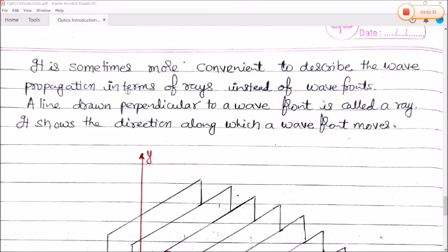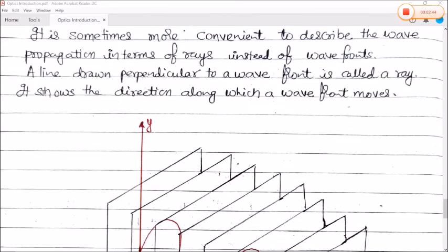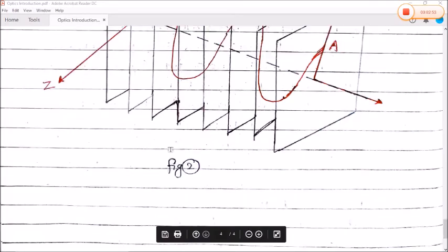It is sometimes more convenient to describe the wave propagation in terms of rays instead of wavefronts. A line drawn perpendicular to the wavefront is called a ray, and it shows the direction along which the wavefront moves.